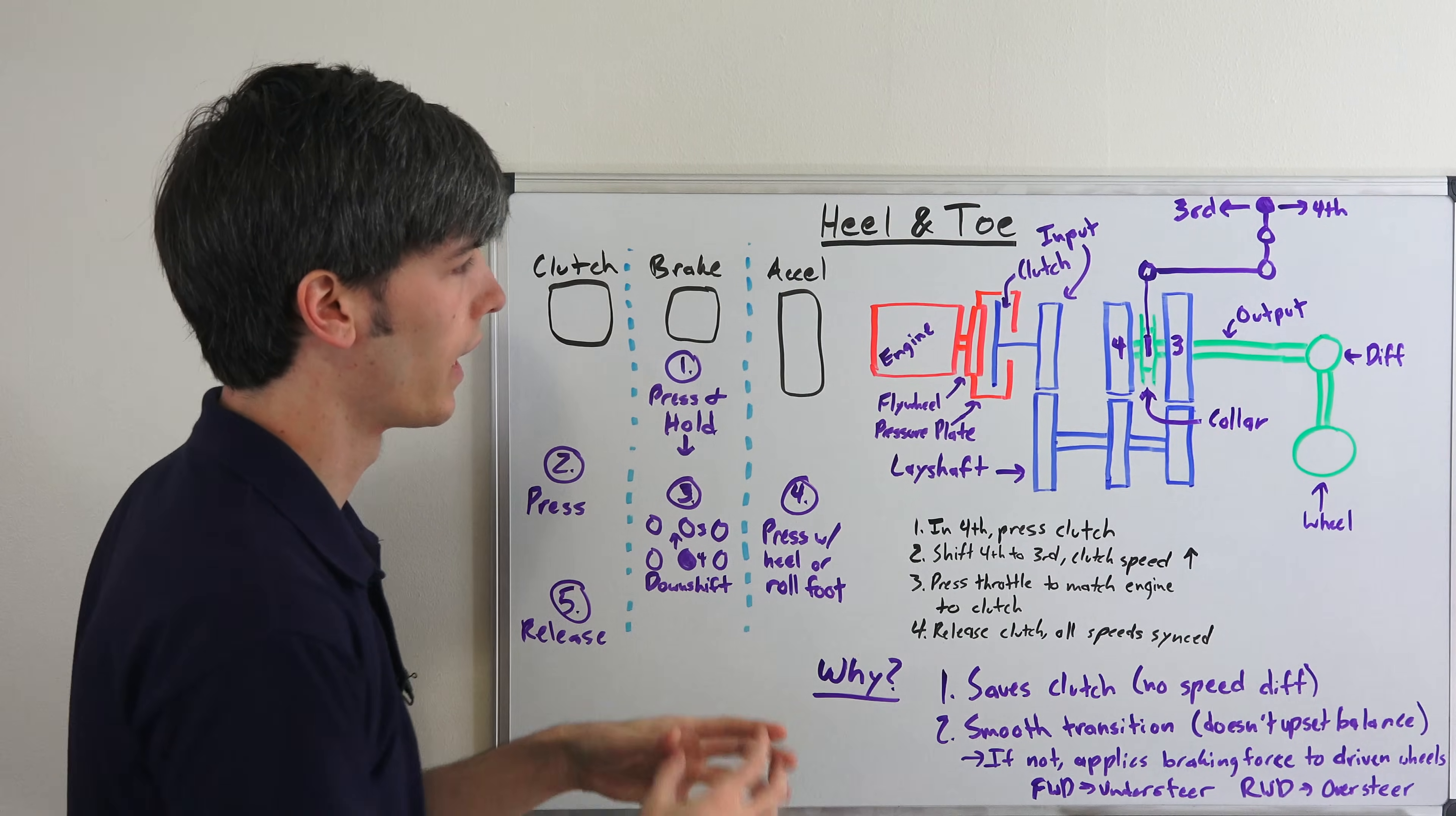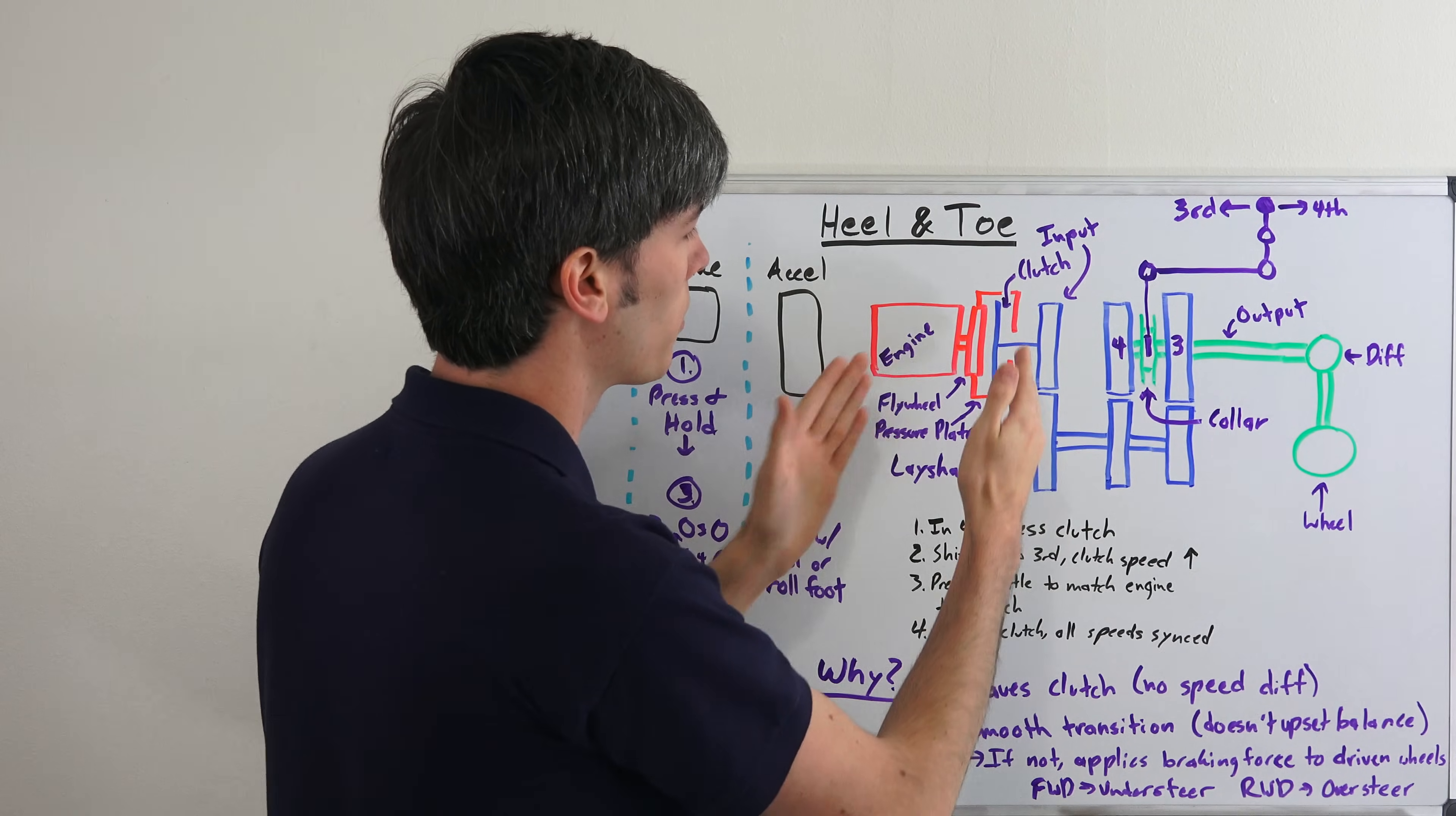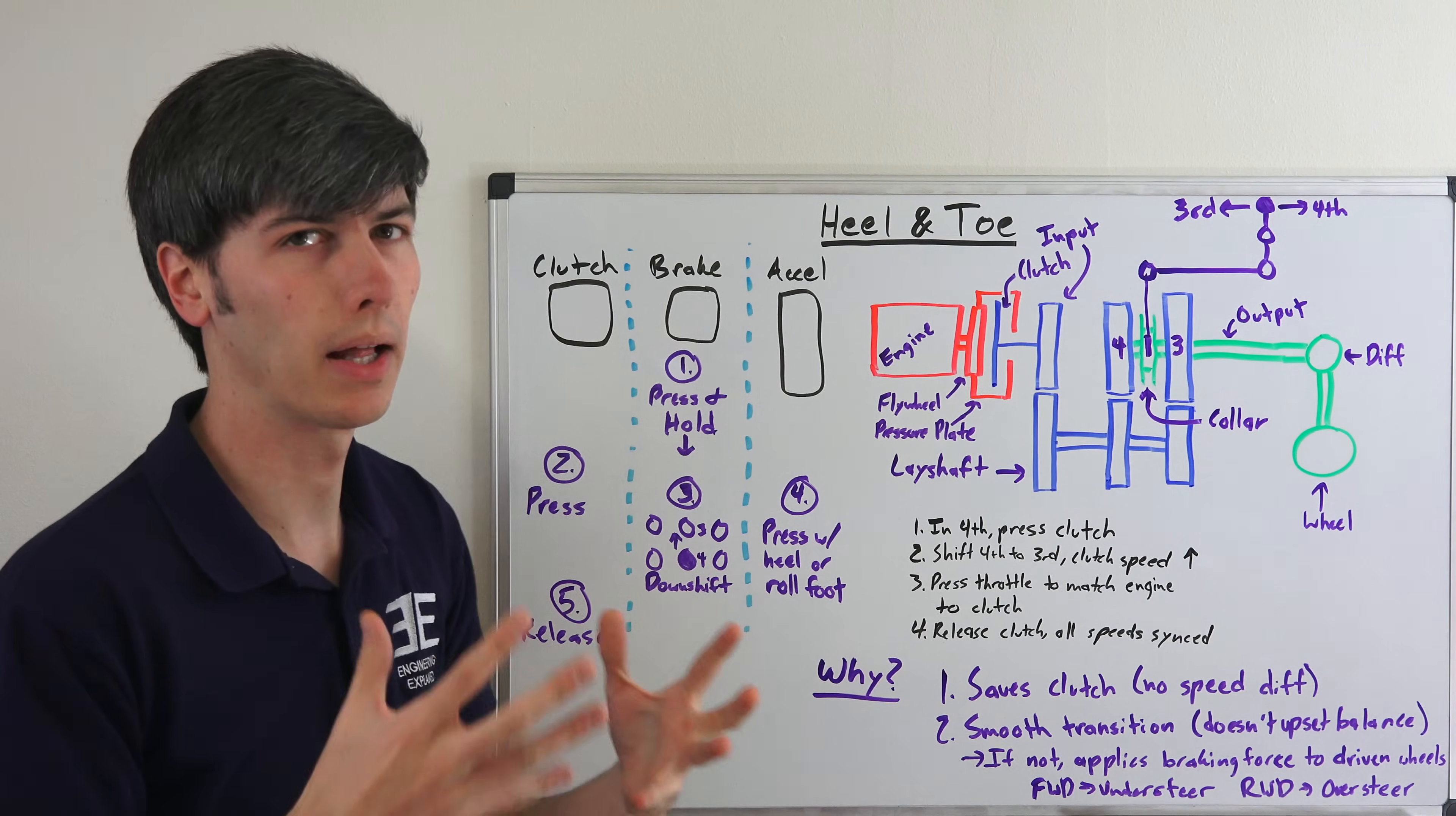So why is this done? Well, two main reasons. First of all, you're going to be saving your clutch because you don't have a speed differential between the flywheel and the clutch when they engage. So you're going to be saving your clutch. The other thing and probably more importantly is you're going to have a smooth transition. You're not going to upset the balance of the car.